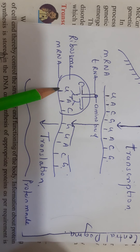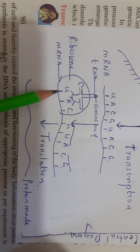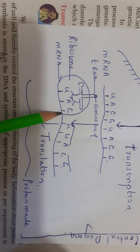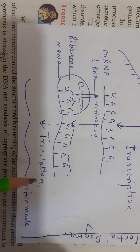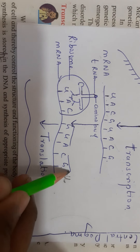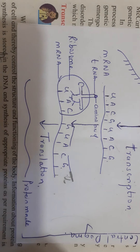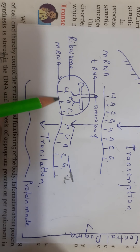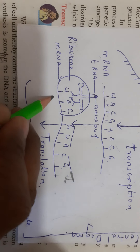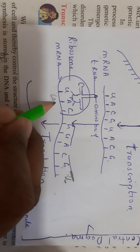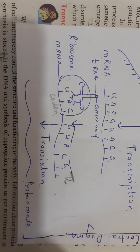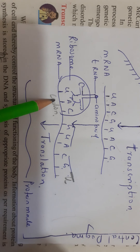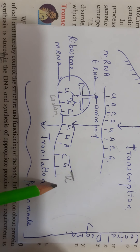On the mRNA, nucleotides are present in groups of three nucleotides — one, two, three — called a codon. Each codon codes for something. Many such codons are present on the mRNA, and each codon corresponds to a specific amino acid.